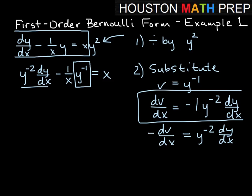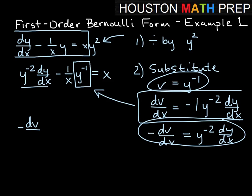Okay, so if we use this expression and this expression and substitute in here, then that will give us negative dv dx minus 1 over x times v equals x.